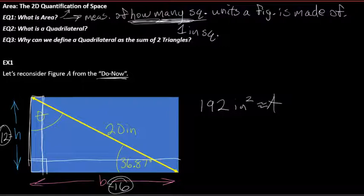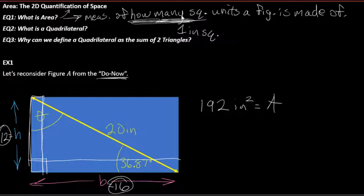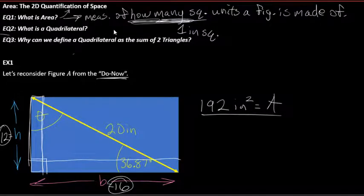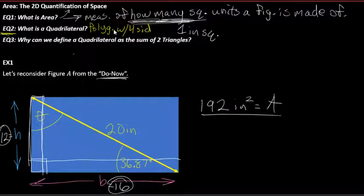The area of this two-dimensional figure is exactly 192 square inches. Now let's answer EQ2: what is a quadrilateral? A quadrilateral is any polygon with four sides and four vertices.